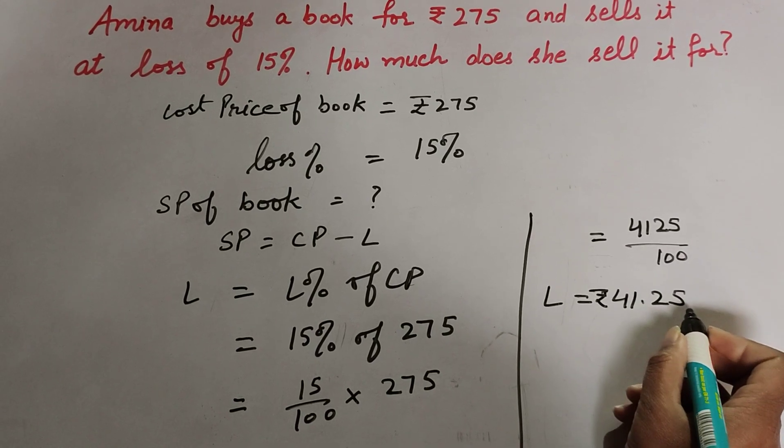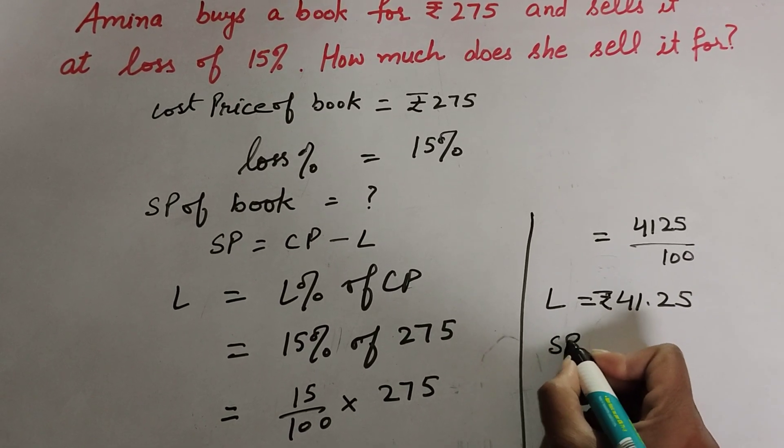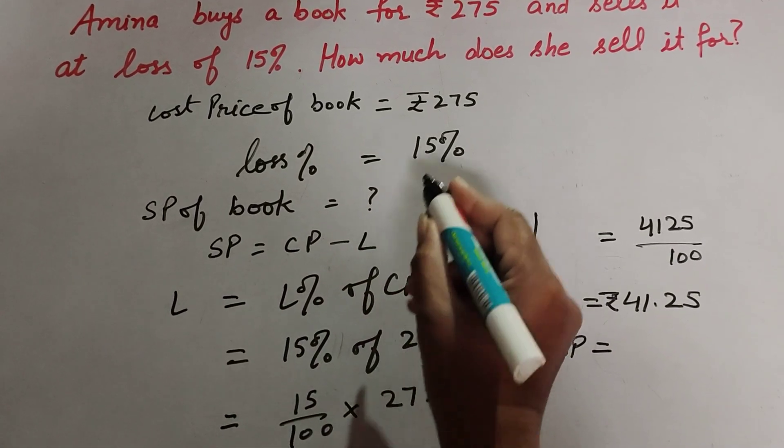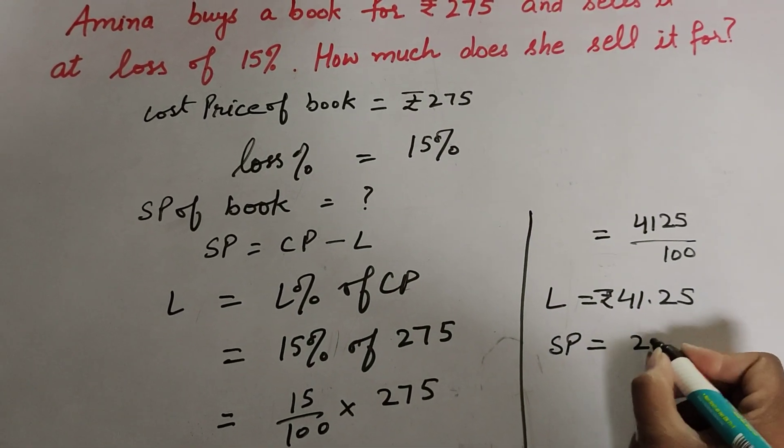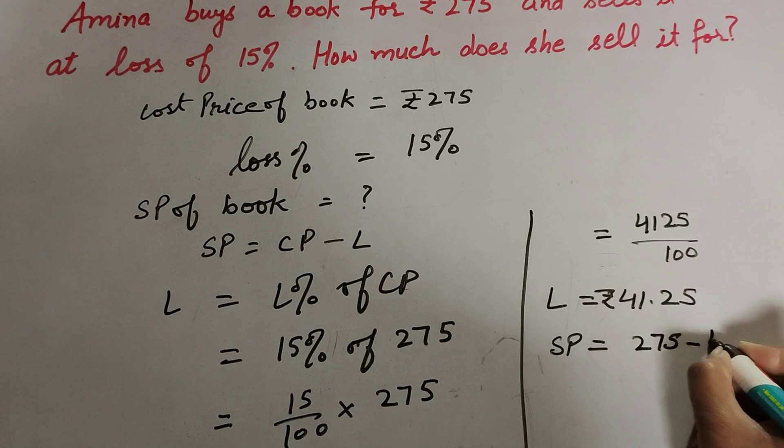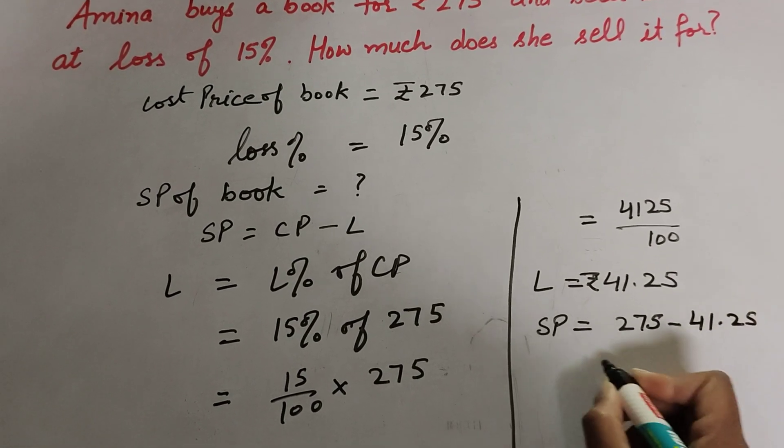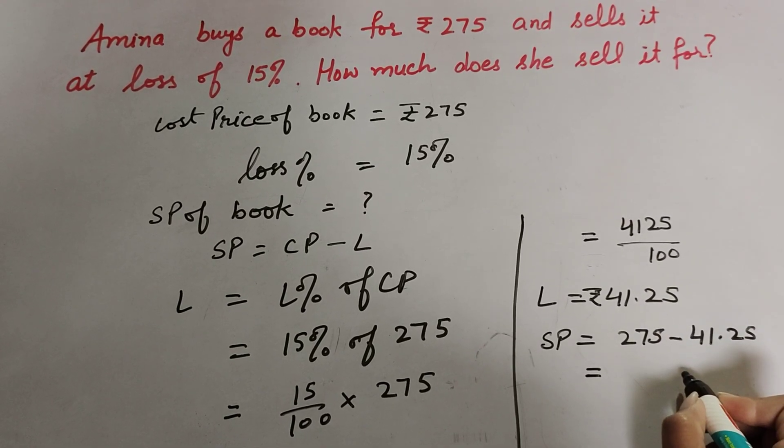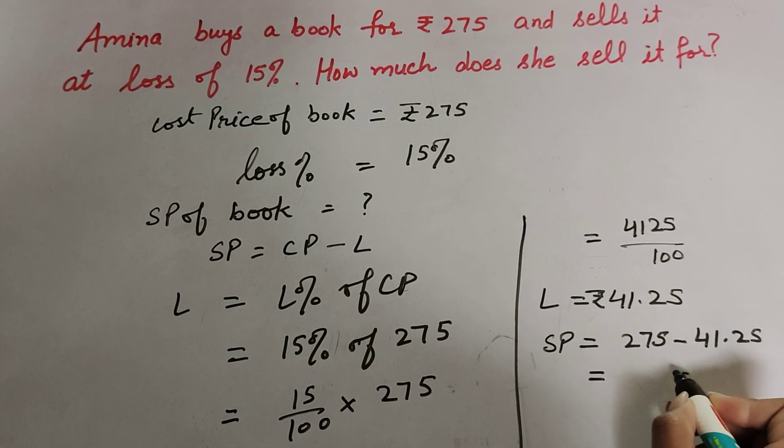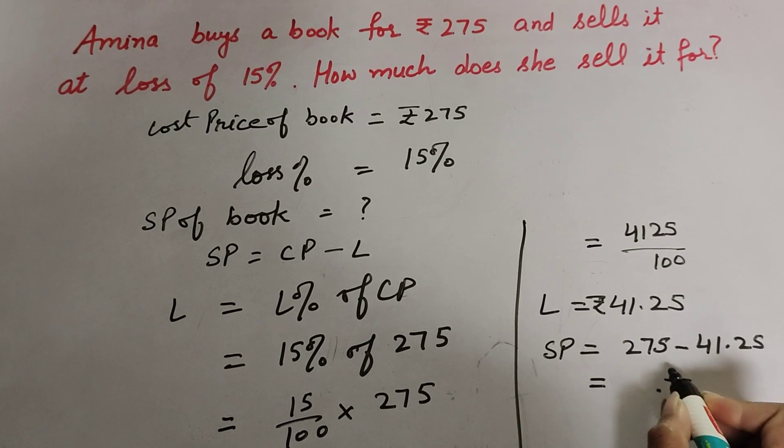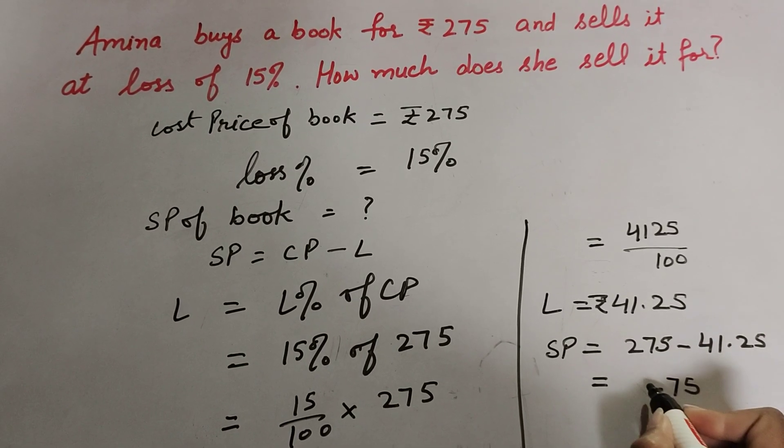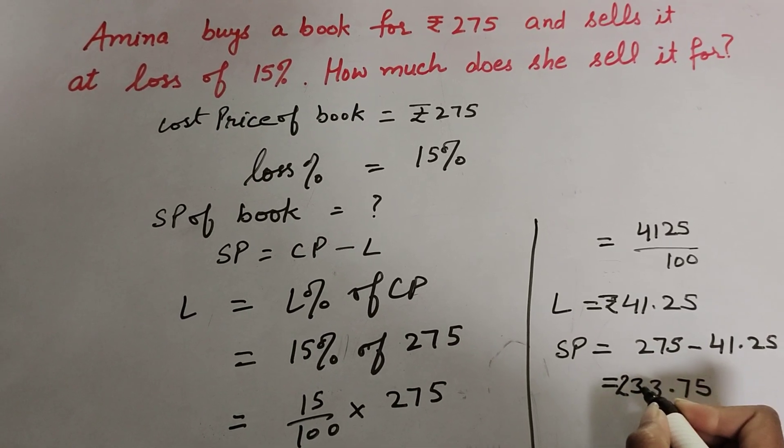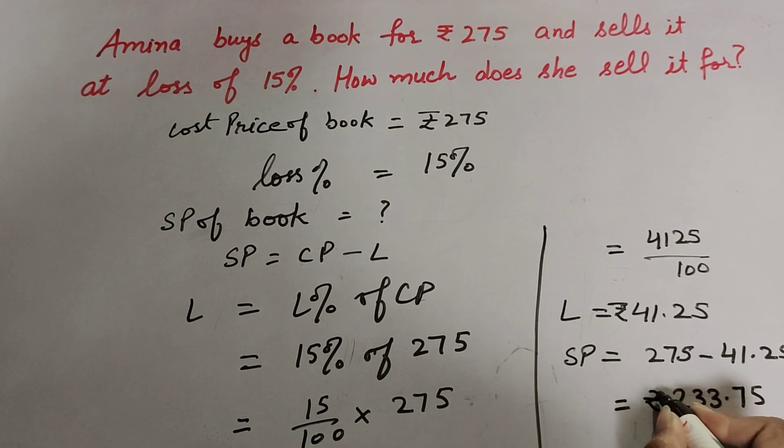So loss is equal to 4125 divided by 100, which equals 41.25. Loss is equal to rupees 41.25. Now we find selling price of the book: it equals CP minus loss, which is 275 minus 41.25. 275 minus 41.25 gives us 233.75.